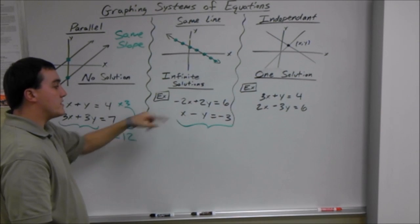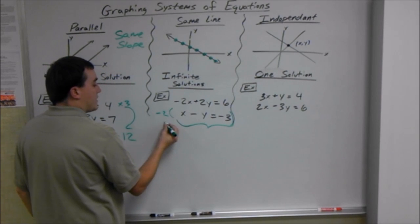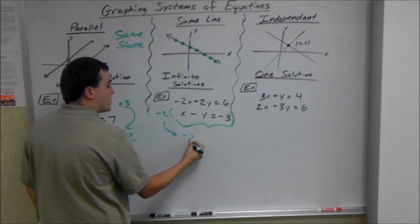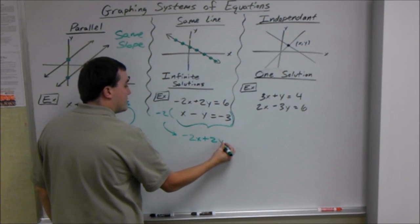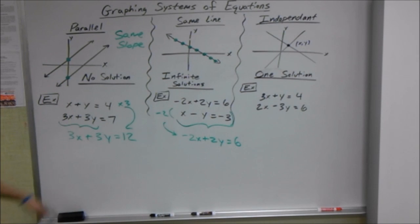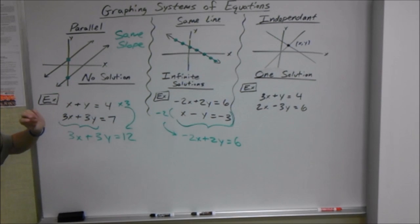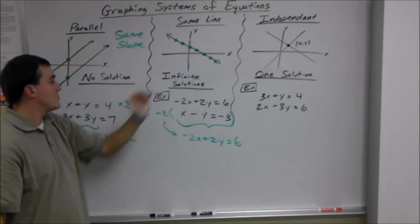So here, we multiply this one by negative 2. And if we bring that down, we get negative 2x plus 2y equals 6, which is the same as the first equation. So if you can multiply something and they become the exact same thing as the other one, it means they're the same line and that gives you infinite solutions.